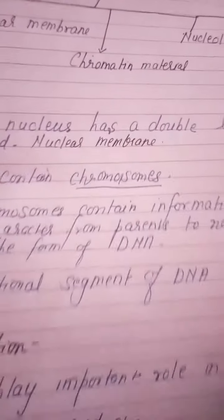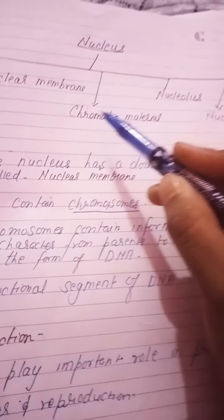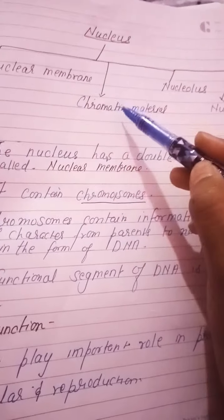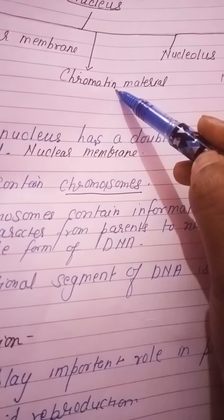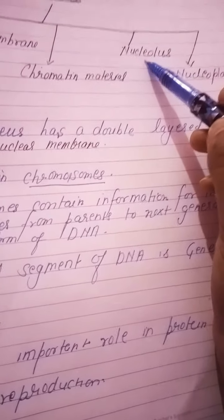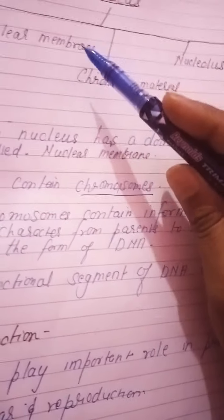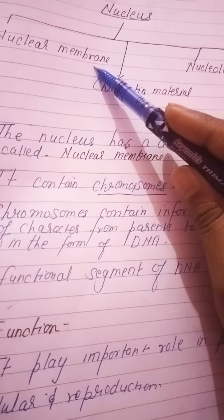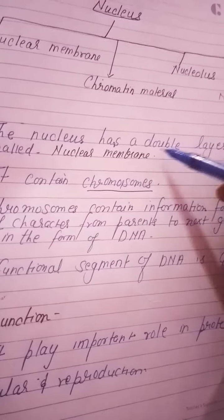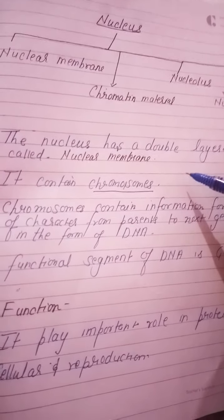Regarding the nucleus, we have four things to learn: first, the nuclear membrane; second, chromatin material — chromatin material fibers present in the nucleus; third, nucleolus; and fourth, nucleoplasm. The nuclear membrane is a double-layer structure which is the outer covering that separates the nucleus from the cytoplasm.